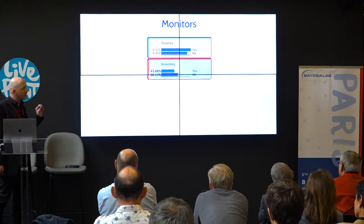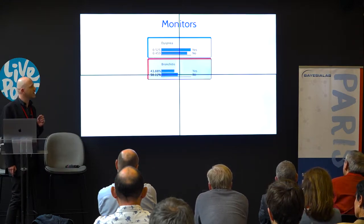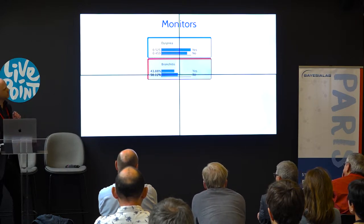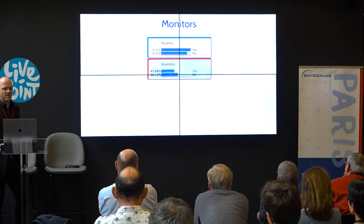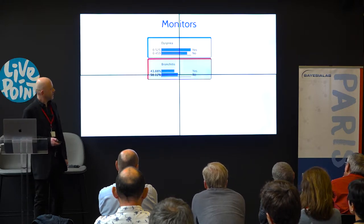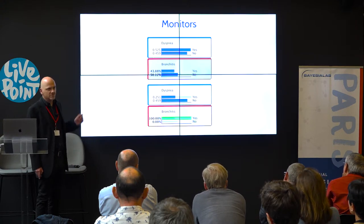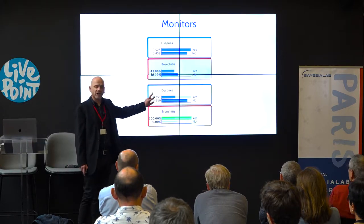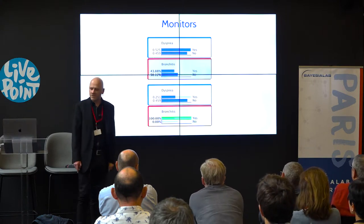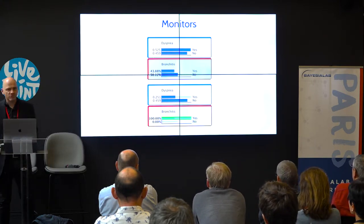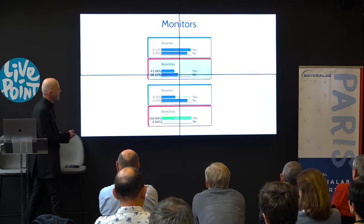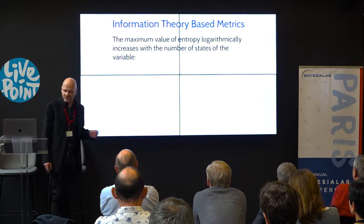We added a feature in the monitor where you can directly see the expected global loss. For a node like Dyspnea, you have the expected global loss for yes and for no — these are not probabilities, just expected log losses. You also have the probability distribution for bronchitis. If you set bronchitis to yes, you can see that even though the probability distribution for Dyspnea changes, the expected global loss for no does not change. You can now switch and use this in your model.